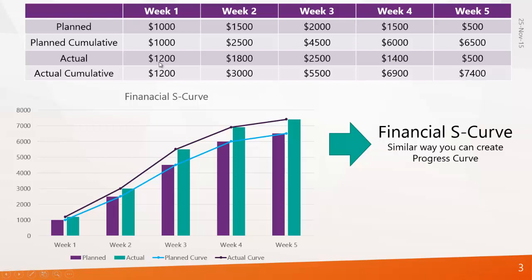When you create a graph based on planned cumulative and actual cumulative you are generating an S-curve. Here you can see the curve — on the x-axis it is showing the time, week one through five, and on the y-axis it is showing the cost, from $1,000 to $8,000.